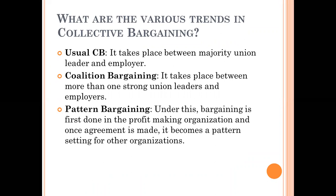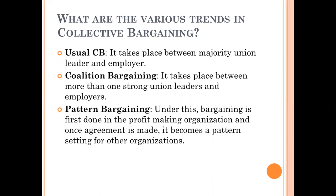The third type is patent bargaining, also called factory bargaining. We know that not all firms in an industry are making profits — some firms may be making a profit whereas others are making losses. Generally, trade unions will pressurize the owners of profit-making institutions for an agreement, raising their demands first in the profit-making institutions. Once their demands are met by the profit-making institutions, employees in the loss-making institutions will start raising the same demands. This kind of bargaining, where the same pattern is followed across organizations, is known as patent bargaining.